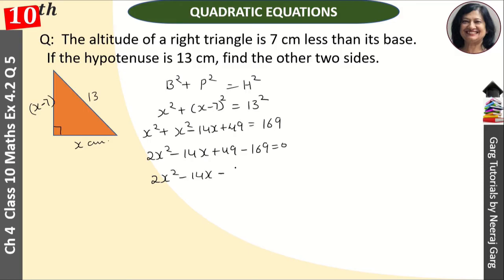Two se poori equation divide ho raha hai, toh two se hum divide kar denge. Ye ho gaya x square minus 7x minus 60 that is equal to zero.